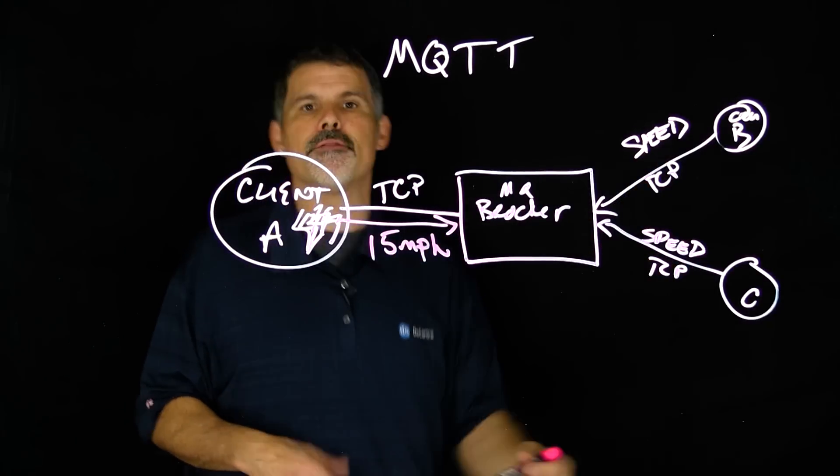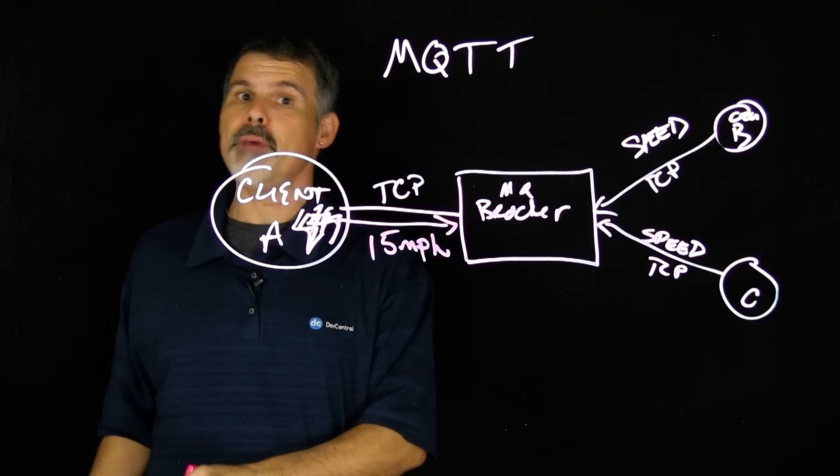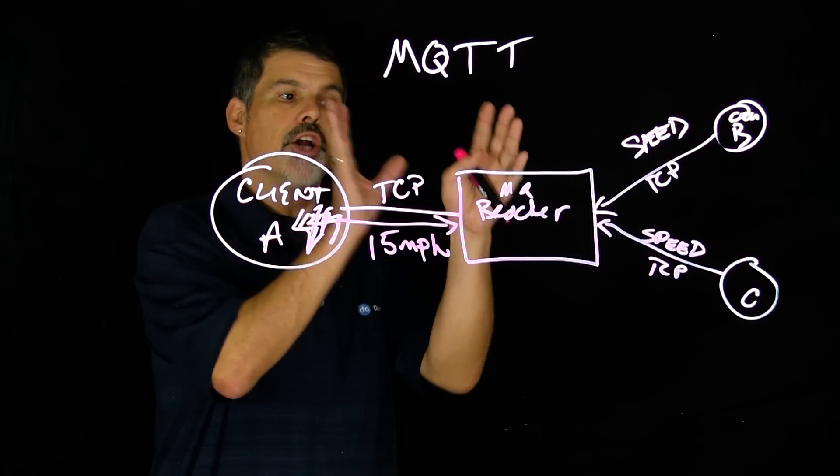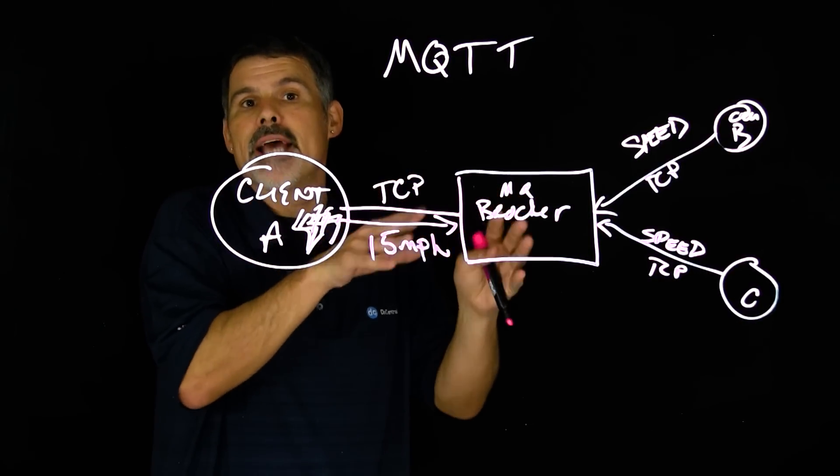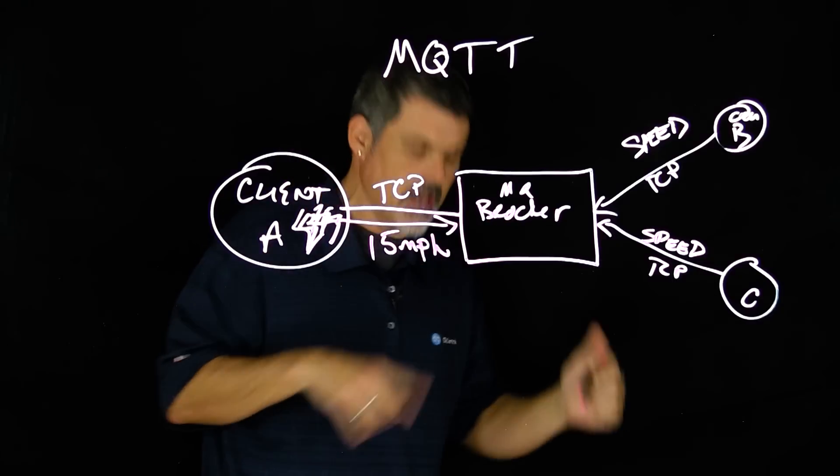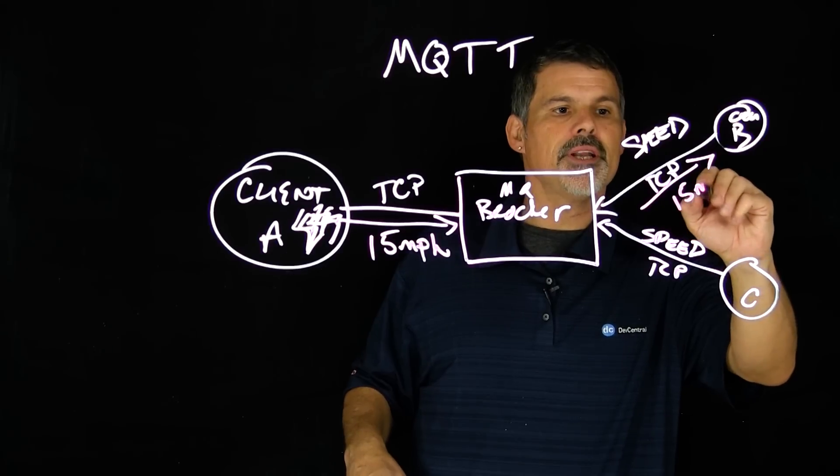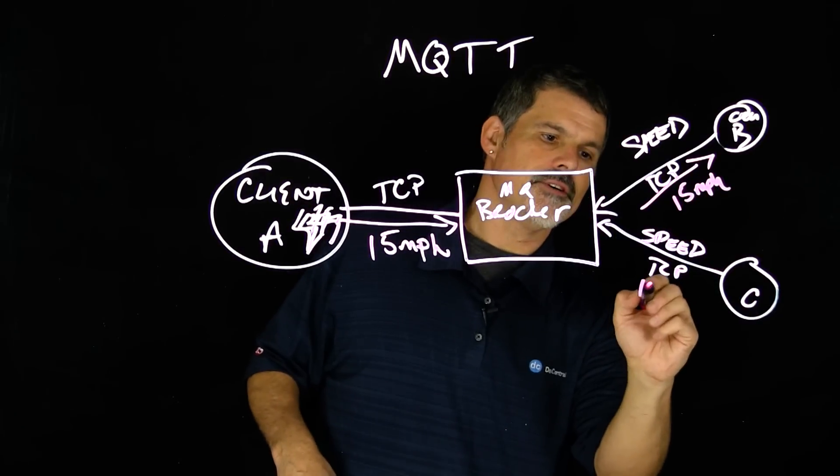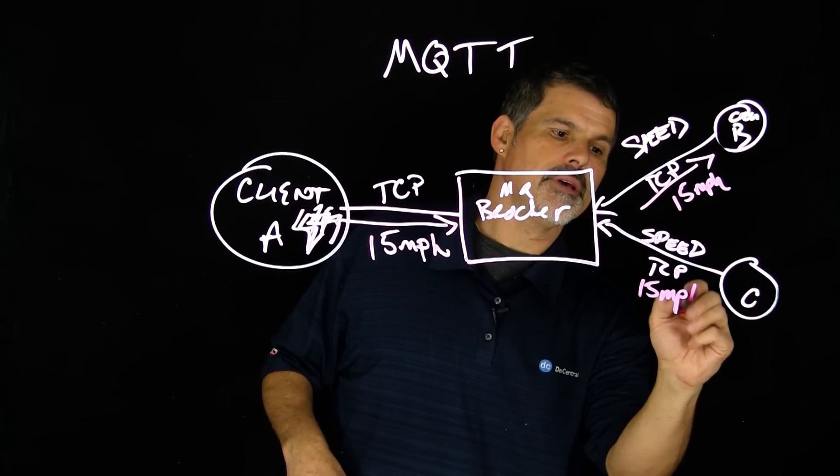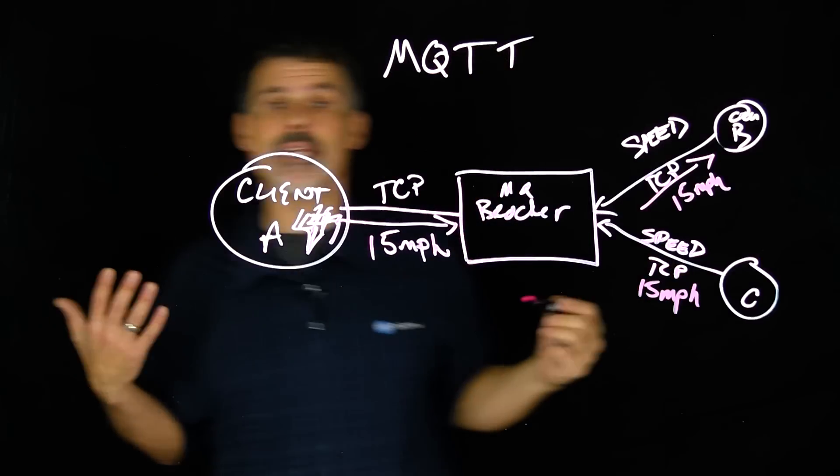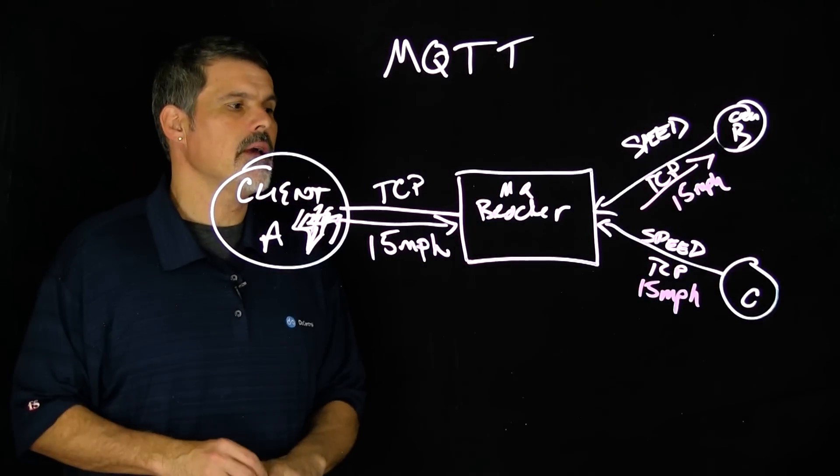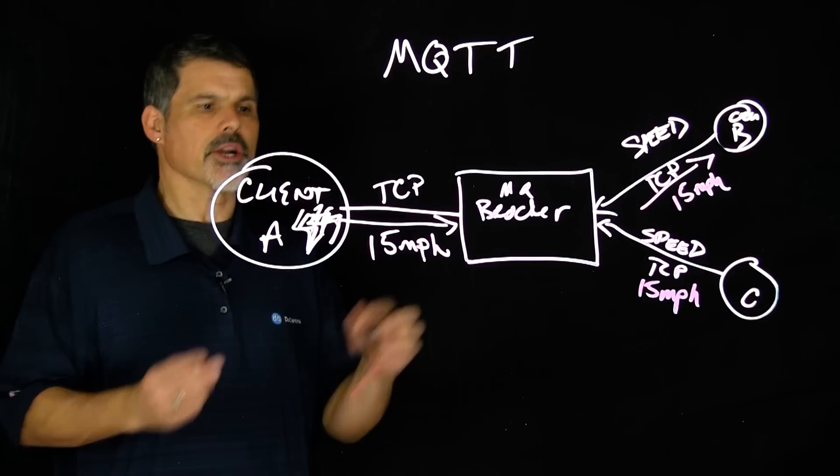These clients out here have subscribed to the topic of speed. And so when a new piece of information gets published to the topic, they then get the information, 15 MPH, 15 MPH. And that's really as simple as it gets on how MQTT works.